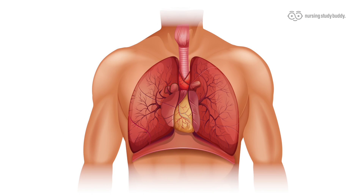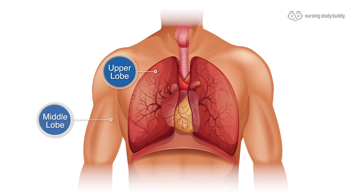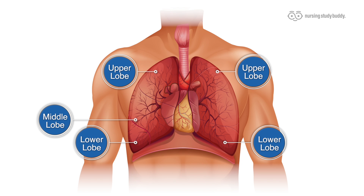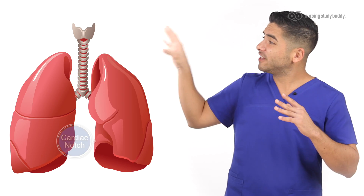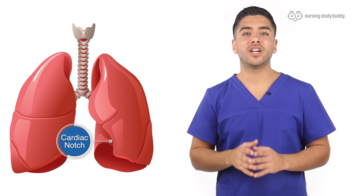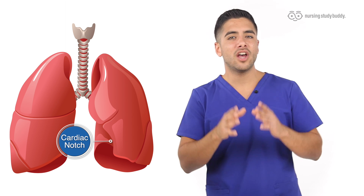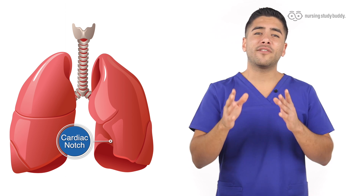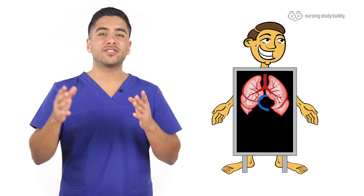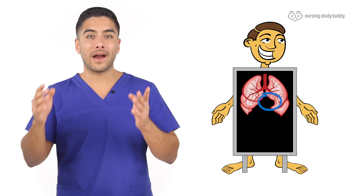Now let's get into the lungs. The right lung has three lobes while the left lung has two. In the right lung we have the upper, the middle, and the lower, and in the left lung we just have the upper and the lower. It is important to remember because as a nurse or a medical professional, when checking breathing sounds you're going to want to check each lobe. On the left lung there's also a cardiac notch, which is where the heart makes a bit of an indentation on the lung — this makes it easy to identify the left lung from the right lung on a picture or on an x-ray.